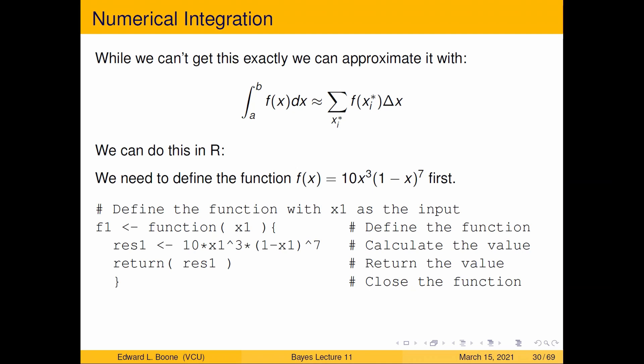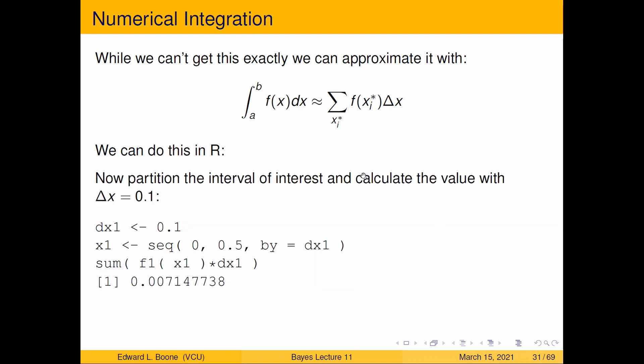All right, so now that we've defined the function we just partition the interval. So I'm going to make a dx1 because I want to be able to change this value. Remember in my picture I was going to go from 0 to 0.5. So x1 is going to be a sequence from 0 to 0.5 by dx1 which is the width of the interval.